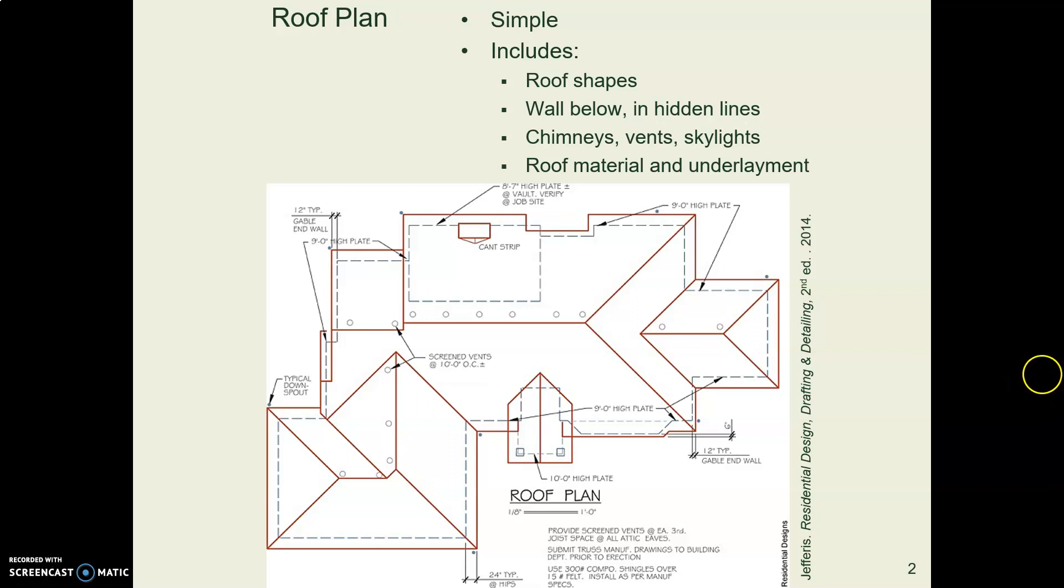Usually we don't show separate framing, we just show here's what the thing looks like with all the hips and valleys and ridges and so forth. We'll show whatever sticks out of the roof, the vents, the chimneys, all that sort of thing, and then we tell them what kind of roofing material we're going to use.